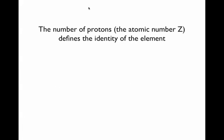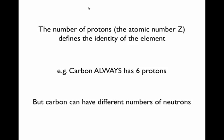The number of protons defines the identity of the element. For example, carbon always has six protons, but it can have different numbers of neutrons.